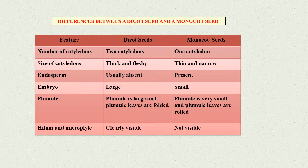Hilum and micropyle: In dicot seeds, it is clearly visible. In monocot seeds, it is not visible.